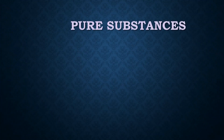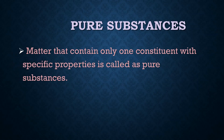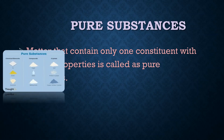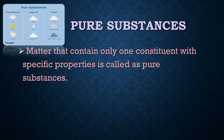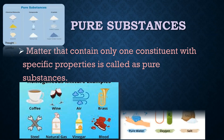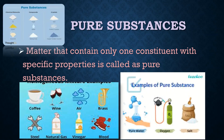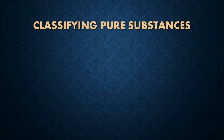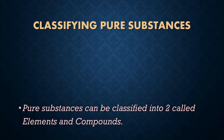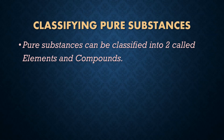First, we discuss about pure substances. Matter that contains only one constituent with specific properties is called a pure substance. Pure substances can be classified into two groups: elements and compounds.